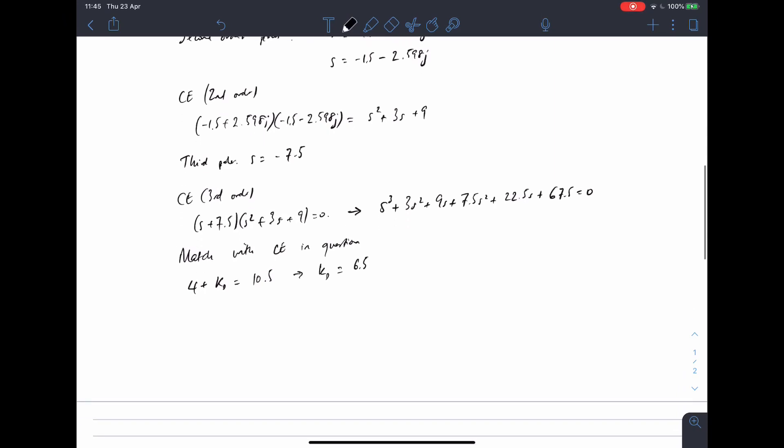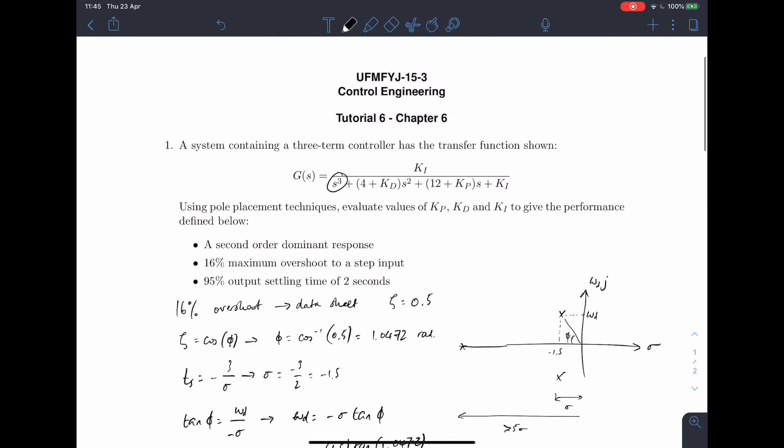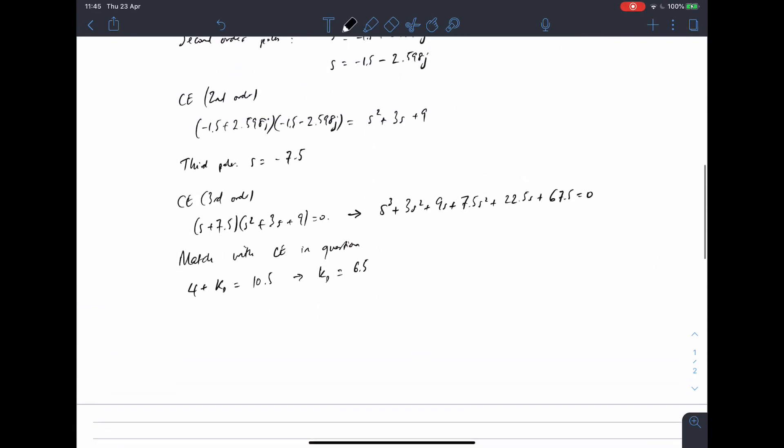And we've got 12 plus Kp, 12 plus Kp equals, we've got the S term, so we've got 9 plus 22.5. So that's going to be 31.5, that means that Kp must be 19.5, I believe.